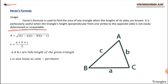The formula is given by: A equals under root of s into (s minus a) into (s minus b) into (s minus c), where s equals (a plus b plus c) upon 2 — that is the semi-perimeter, half of the perimeter of the triangle — and a, b, and c are the side lengths of the given triangle.